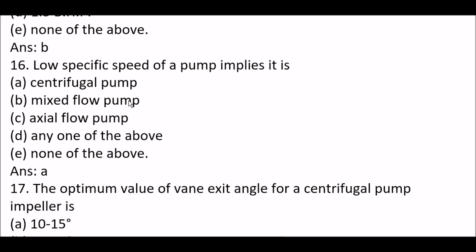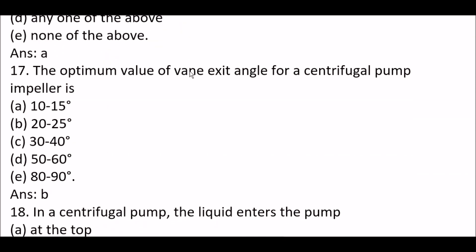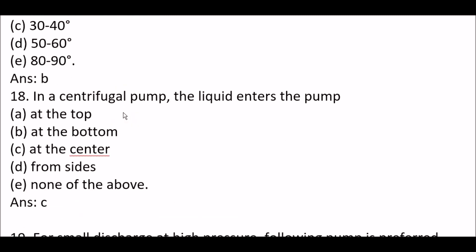Next question. Low specific speed of a pump implies its centrifugal pump. Next question. The optimum value of vane exit angle for a centrifugal pump impeller is option B, 20 to 25 degrees.